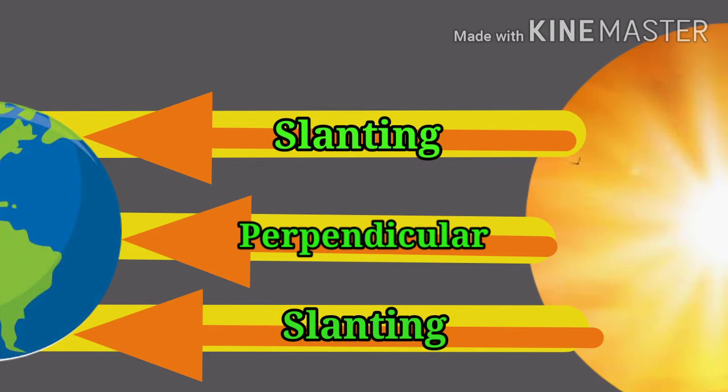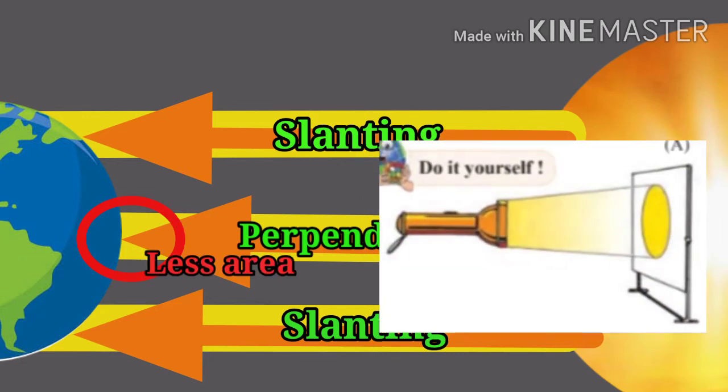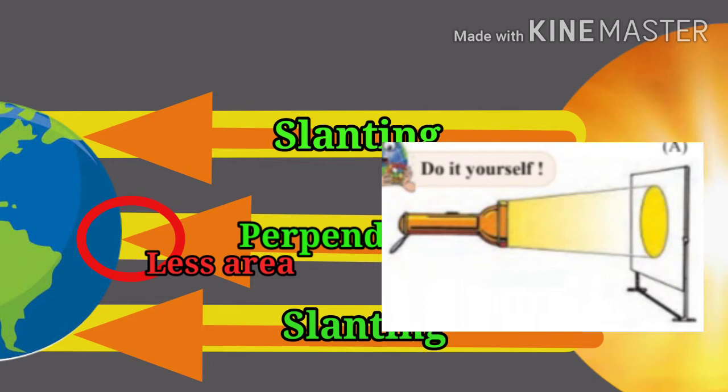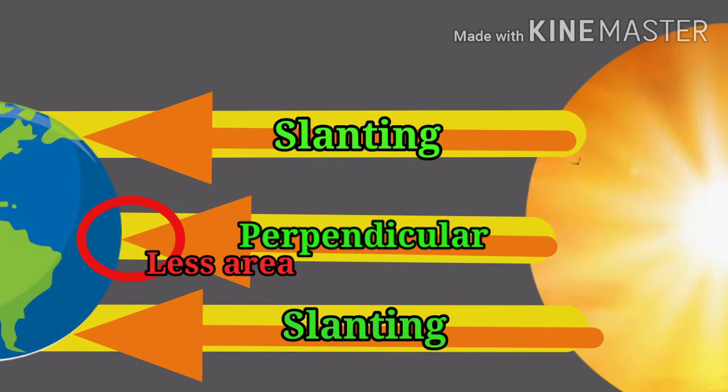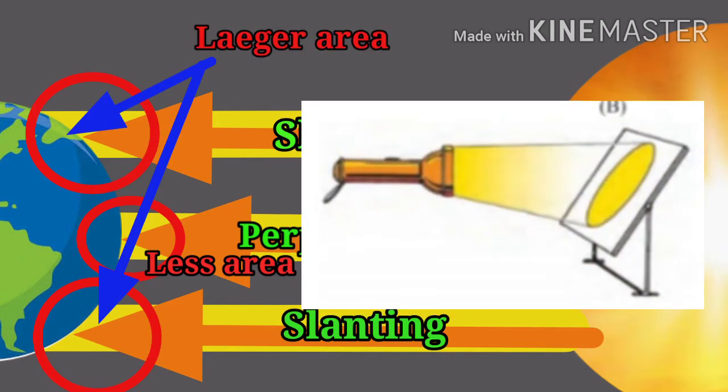The perpendicular rays occupy less area. See Figure A. The part where the rays occupy lesser area receives bright sunshine and greater heat. Hence, the surface there gets heated more and the air becomes hotter. The slant rays occupy a larger area. See Figure B.